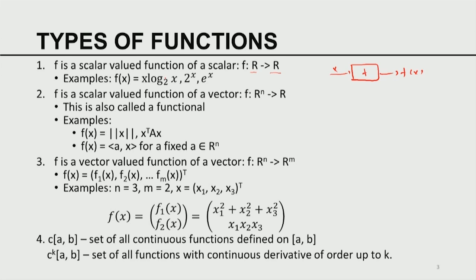You can think of F as a transformation — a black box where something goes in and something gets out. F is a scalar-valued function of a vector. In this case, x belongs to R^n but F of x belongs to R — it converts a vector into a scalar. That is what is called a scalar-valued function of a vector, also called a functional. Examples include: the norm of x, a quadratic form x^T A x, and the inner product of x with a fixed vector a.